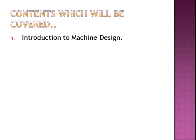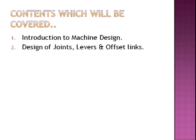In the forthcoming tutorials, I'm going to cover seven chapters. The first is the introduction to machine design, in which I'll discuss certain basic concepts required to design any component. In the second chapter, I'll discuss the design of joints, such as cotter joint, knuckle joint, turnbuckle, some levers and offset links.